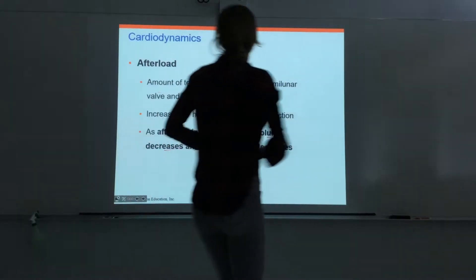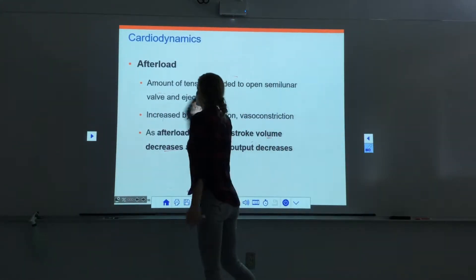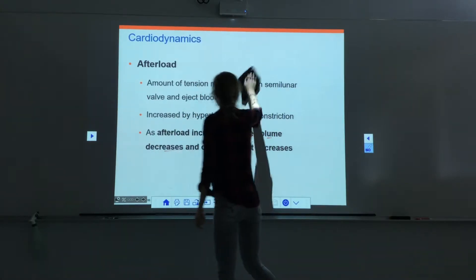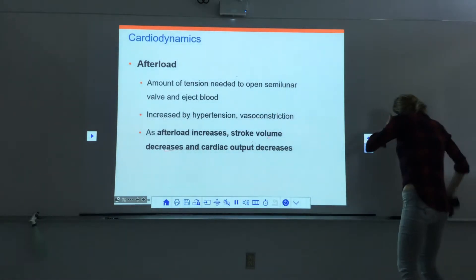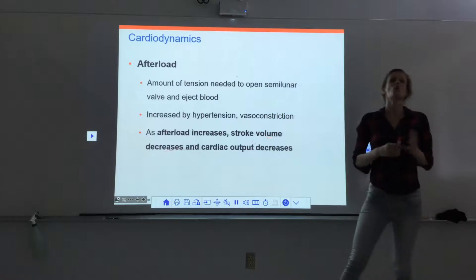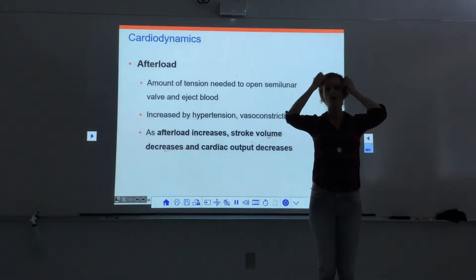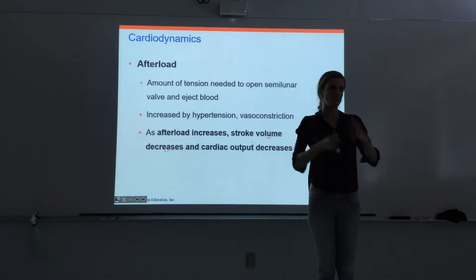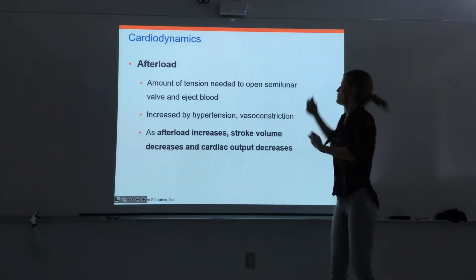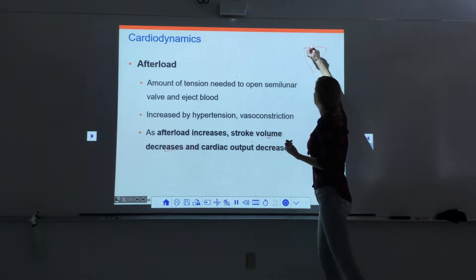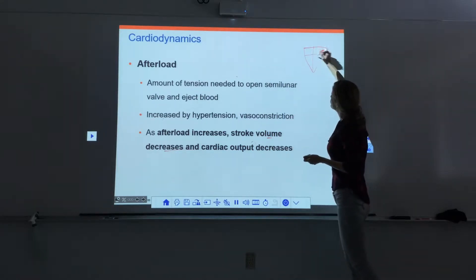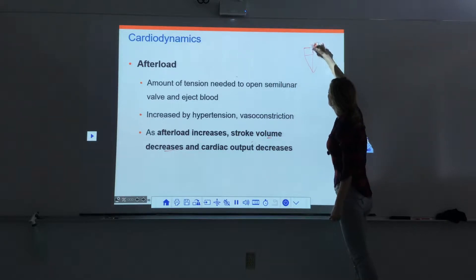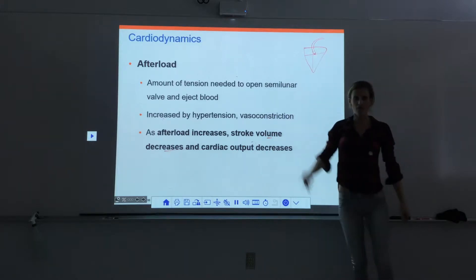Afterload varies inversely with stroke volume and cardiac output, so they vary in opposite ways. Afterload is essentially how much force it takes to open the semilunar valves and eject blood from the heart. If you look at the left ventricle, blood is ejected out through the aorta, and at the bottom of the aorta there is a semilunar valve.